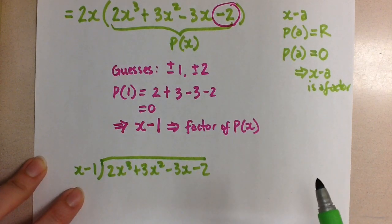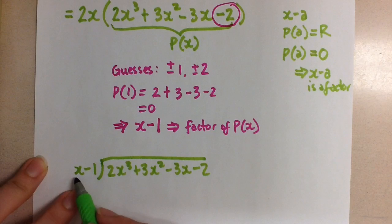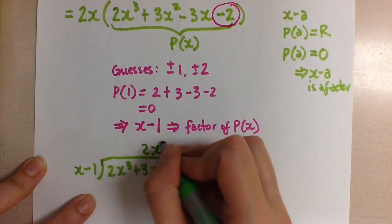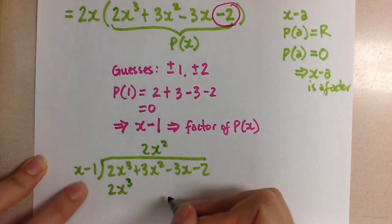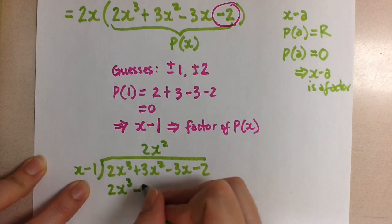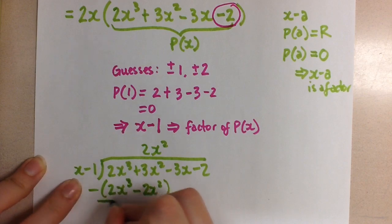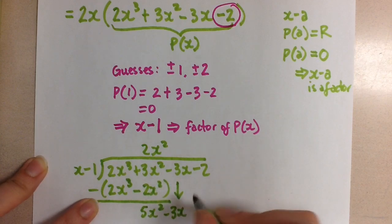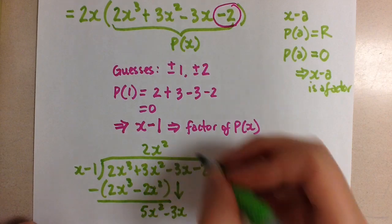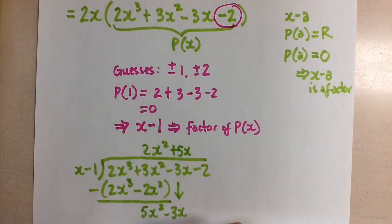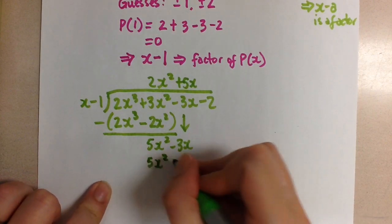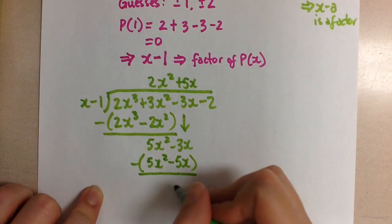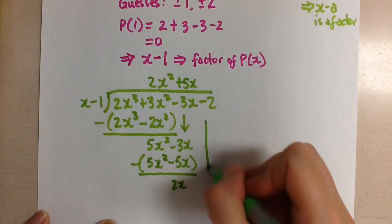X goes into 2x cubed 2x squared times, and we get 2x cubed here. When we multiply, we get minus 2x squared. Subtract. The first two cancel, and here we have 5x squared minus 3x. X goes into 5x squared 5x times, and we multiply and get 5x squared minus 5x. Subtract to get 2x minus 2.